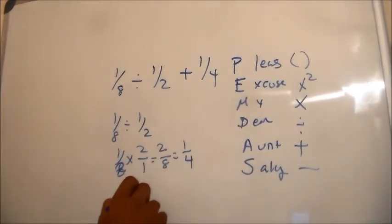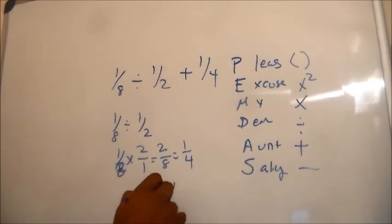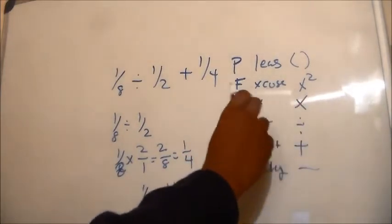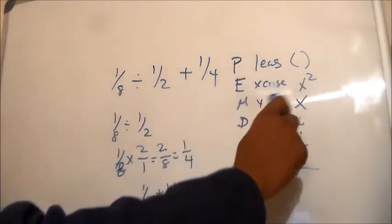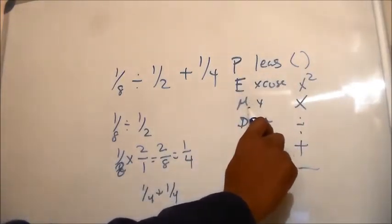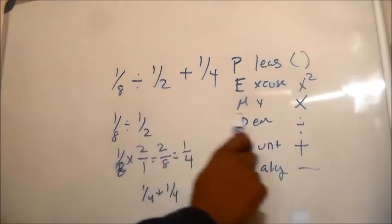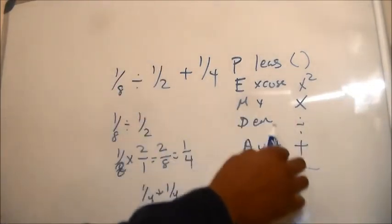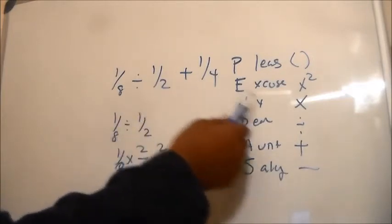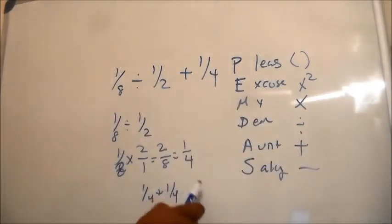And 1/4 plus 1/4 - because we've done the division, there were no parentheses, no exponents, the division turned into a multiplication problem - so 1/4 plus 1/4 is actually 2/4, which equals 1/2.